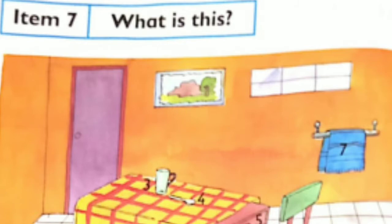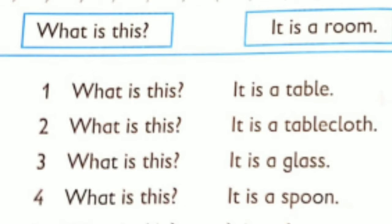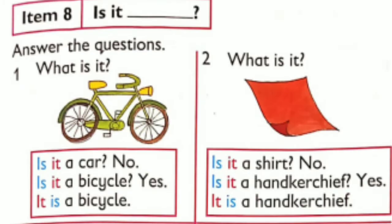Item 7 — What is this? What is this? It is a room. What is this? It is a table. What is this? It is a tablecloth. What is this? It is a glass. What is this? It is a spoon. What is this? It is a drawer. What is this? It is a chair. What is this? It is a towel.